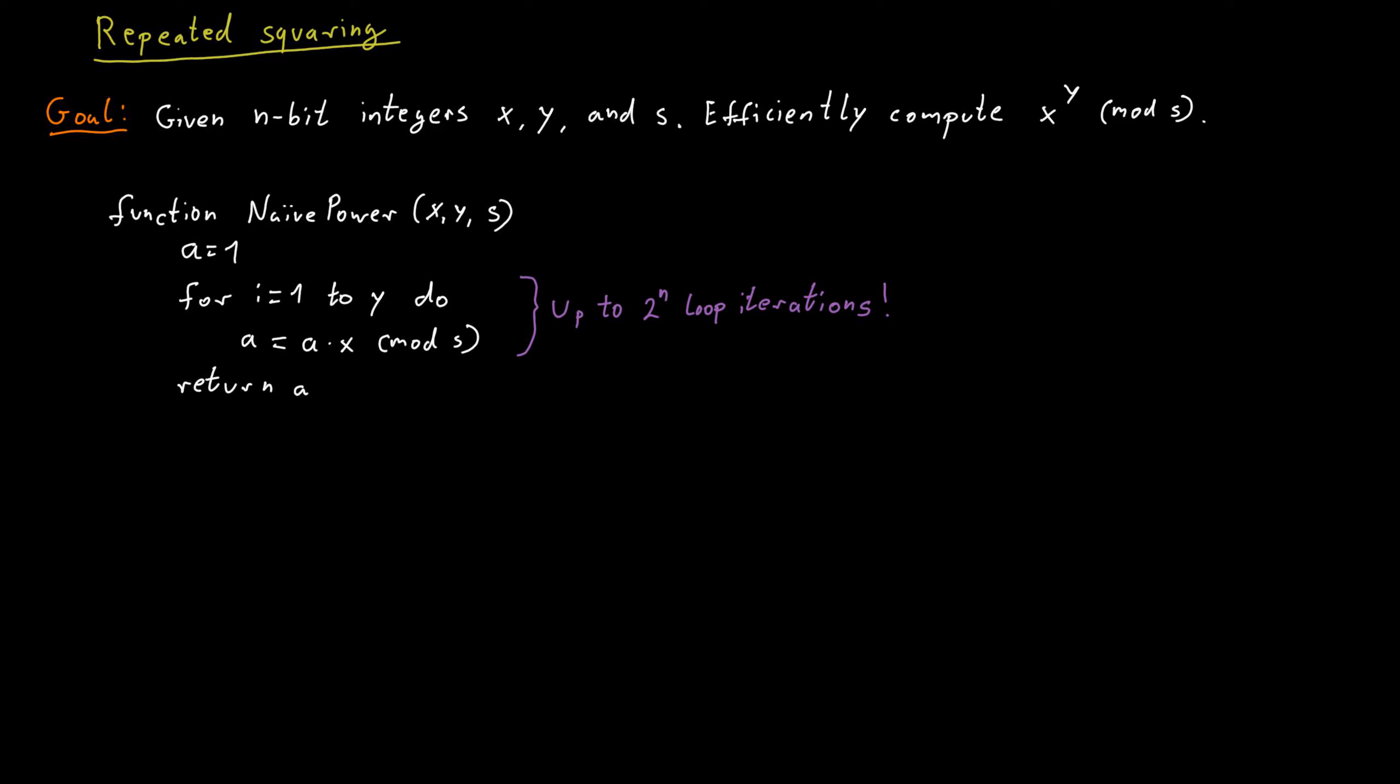The problem here is that we really only make very little progress in each iteration of the loop. But we can make sure that we make much faster progress in terms of which exponent we reached by essentially more or less doubling the exponent in every step.